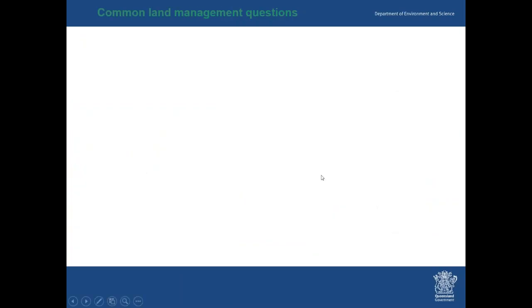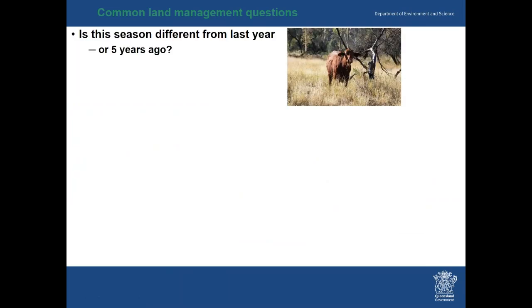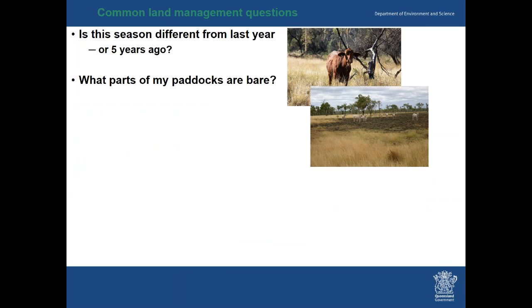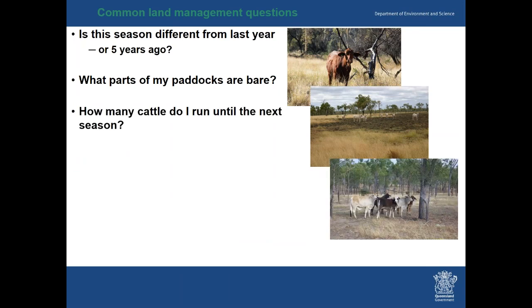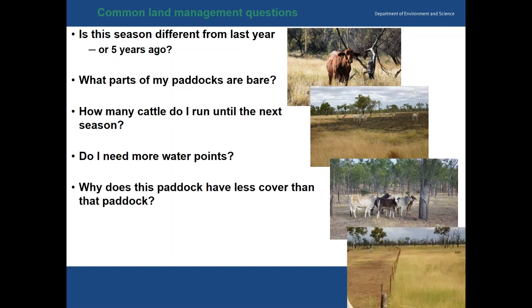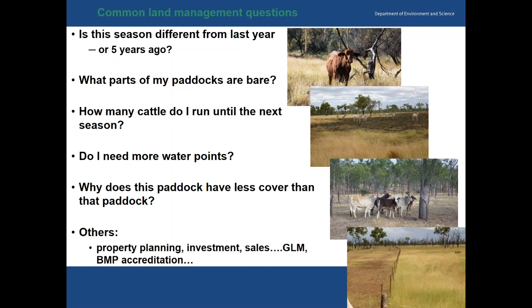Here are some common land management questions FORAGE can help with: Is this season different from last year or five years ago? What parts of my paddock are there? How many cattle do I run until next season? Do I need more water points? Why does this paddock have less cover than that one? These are all linked to property planning, investment, sales, grazing land management, best management practice, and accreditation.